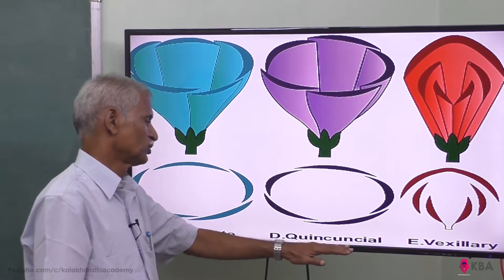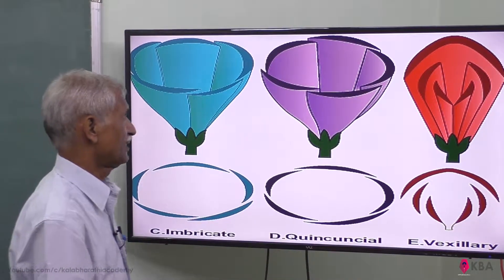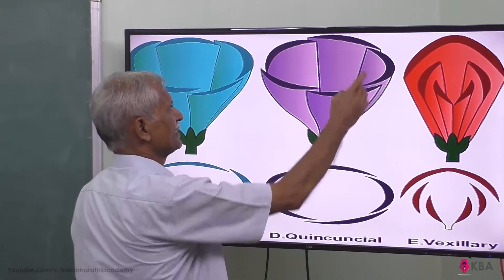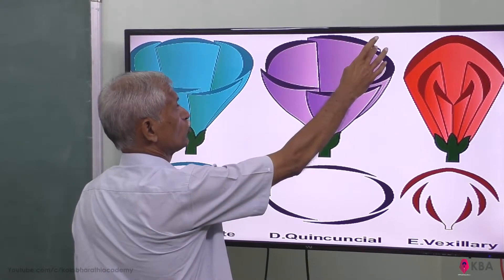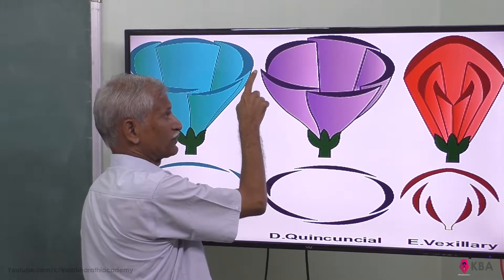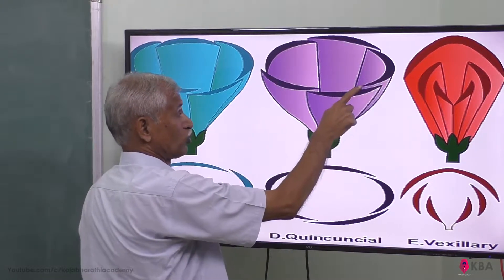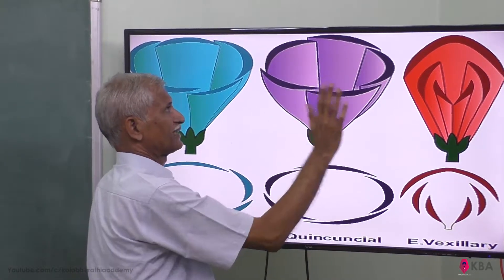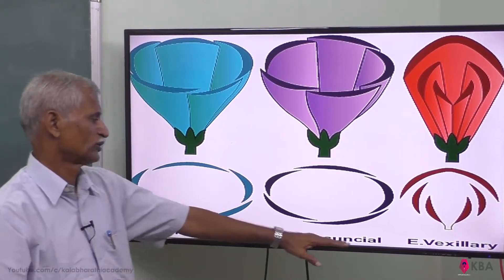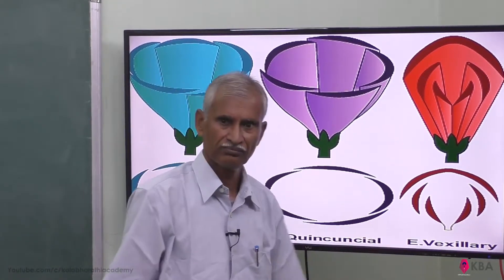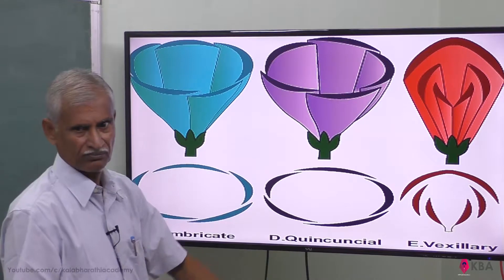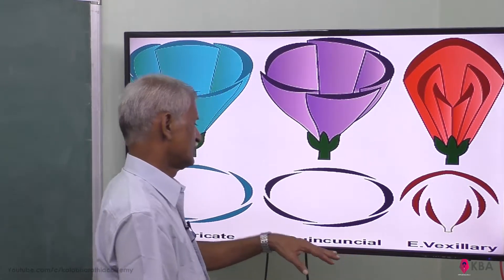In Quincuncial aestivation, the posterior petals are totally outside. In the lateral petals, one margin overlaps and the inner margin is overlapped. The anterior petal is totally outside. So anterior outside, posterior outside, with random overlap in between — that is Quincuncial.